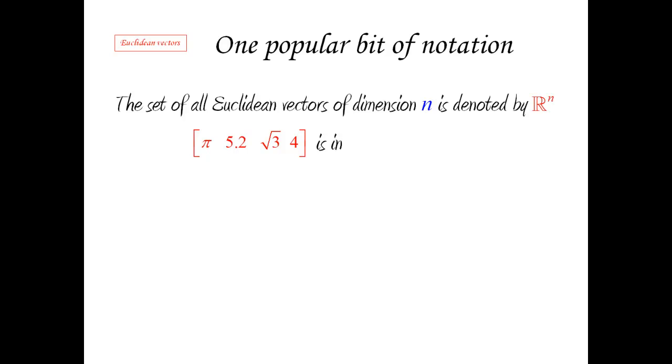So, remember, R means that we're dealing with real numbers as components, and how many components? We're using n components. So, for instance, this particular vector is a vector in R4. Why? Because it has four components. This is an n-dimensional vector. It's a vector of dimension 4. Therefore, it is in R4. Similarly, this vector is in—see if you can guess it—yes, of course, R5, because it has five components.